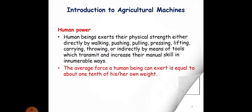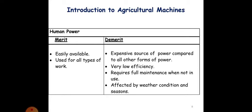The merits and demerits of human power. There are certain merits: it is very easily available and used for all type of works. There are certain demerits also. It is an expensive source of power compared to all other forms of power. It has very low efficiency, requires full maintenance when not in use, and is affected by weather and conditions and seasons.